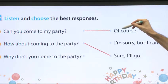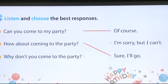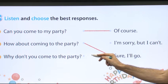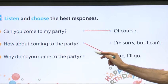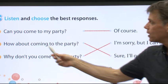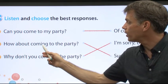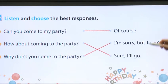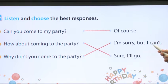These are the same — 'Of course' and 'Sure, I'll go' both mean yes. But how about this one: 'Why don't you come to the party?' — and the answer is, 'I'm sorry, but I can't.' So there are three styles of asking: 'Can you come?' 'How about coming?' 'Why don't you come?' And three answers: 'Of course,' 'Sure, I'll go,' and 'I'm sorry, but I can't.' Those are really good sentences.